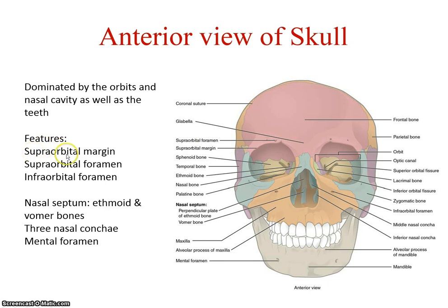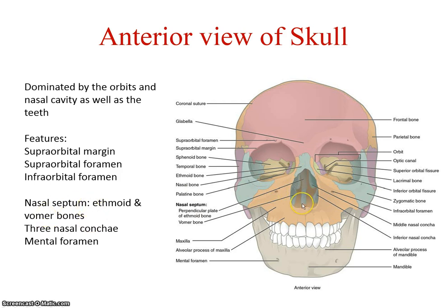Features include a supraorbital margin, which creates the edging to your eye and eyebrow area, and a supraorbital foramen — a little hole for nerves and vessels. There's also an infraorbital foramen, a nasal septum running right down the middle dividing the nares into two sides, created mostly by the ethmoid bone with a small plate-like bone called the vomer bone also contributing.